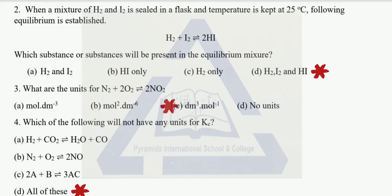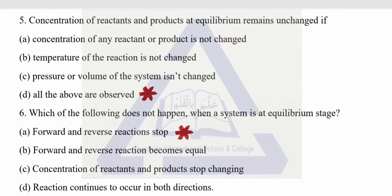Number three — what are the units for N₂ + 2O₂ → 2NO₂? Option C is correct. Number four — which of the following will not have any unit for Kc? After solving, option D is correct — all of these. Number five — concentration of reactants and products at equilibrium remains unchanged if: option D is correct — all of the above are observed.